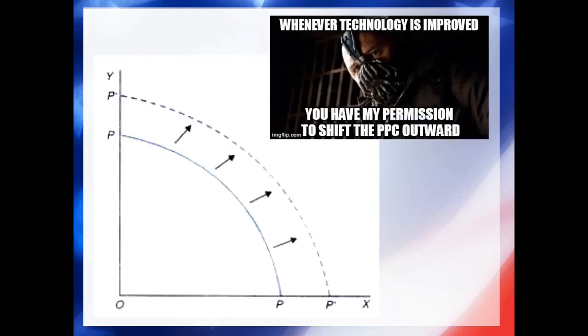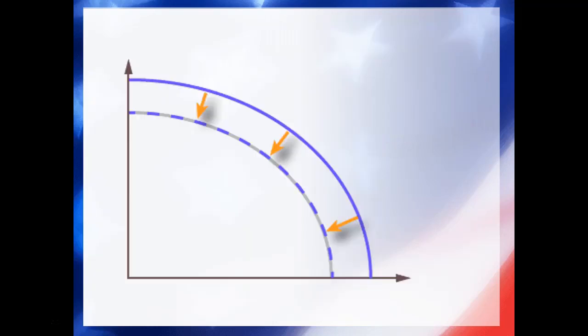When the PPC expands due to an increase in any of the three considerations, there can be more of everything. The production possibilities frontier can also contract. War, disaster, mass casualty events — all can reduce the number of resources that we have in order to create stuff.